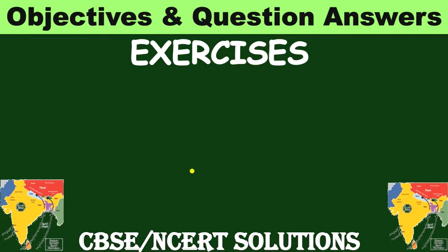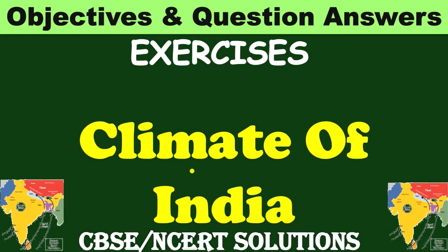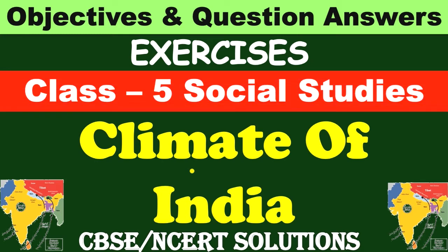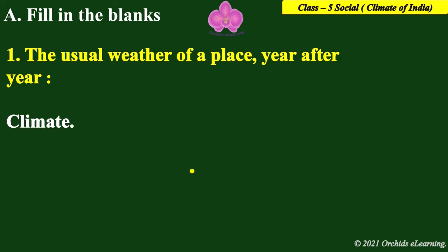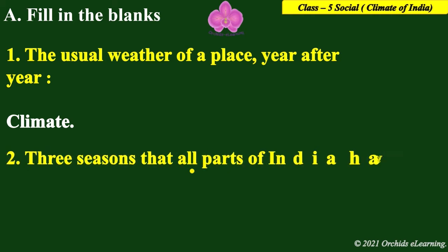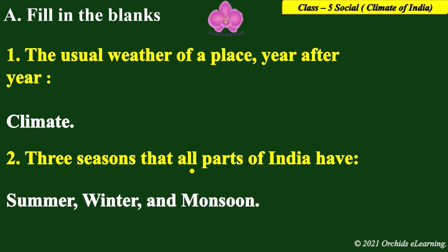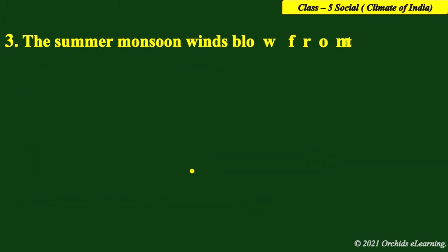Hello guys, welcome back to Orchids E-Learning. Today let us see the objectives and question answers of the lesson Climate of India from Class 5 Social Studies. First question, fill in the blanks: number one, the usual weather of a place year after year is called climate. Three seasons that all parts of India have are summer, winter, and monsoon.